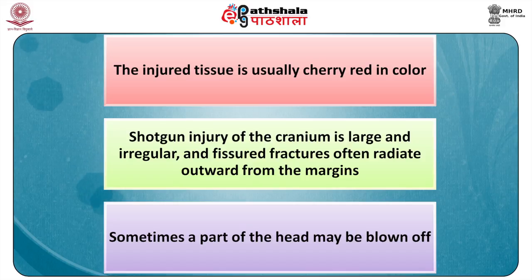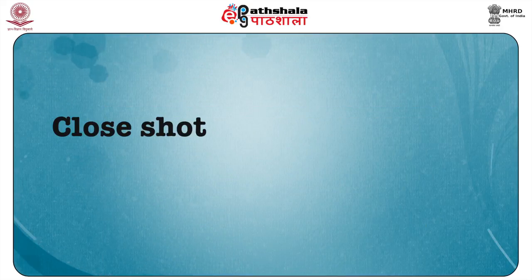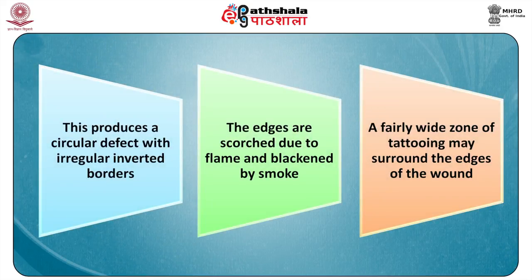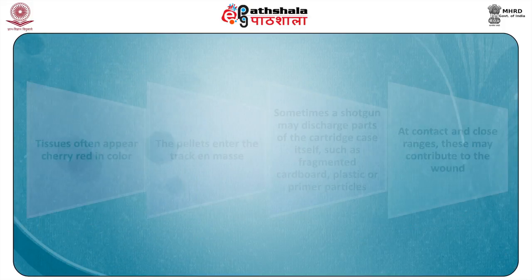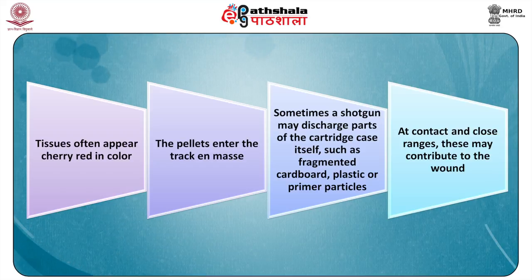Shotgun injury of the cranium is large and irregular, and fissured fractures often radiate outwards from the margins. Sometimes part of the head may be blown off. A close shot at up to 1 meter produces a circular defect with irregular inverted borders. The edges are scorched due to flame and blackened by smoke. A fairly wide zone of tattooing may surround the edges of the wound. The pellets enter the track in mass. Sometimes a shotgun may discharge parts of the cartridge case such as fragmented cardboard, plastic, or primer particles, which may also contribute to the wound.